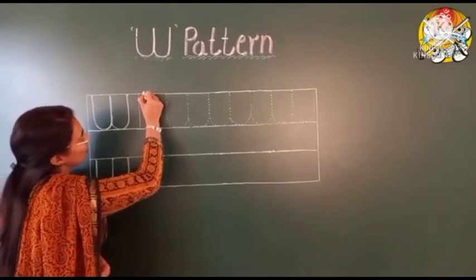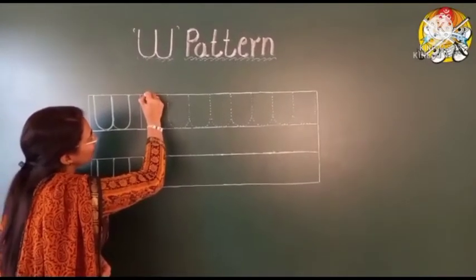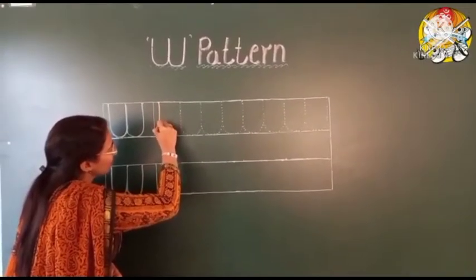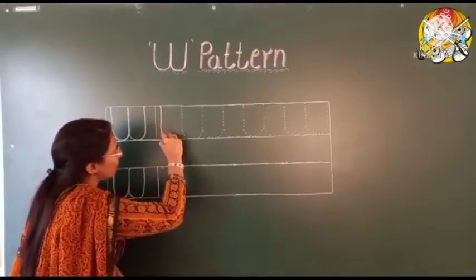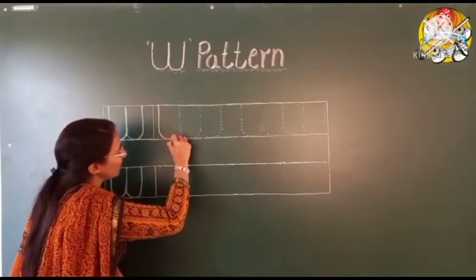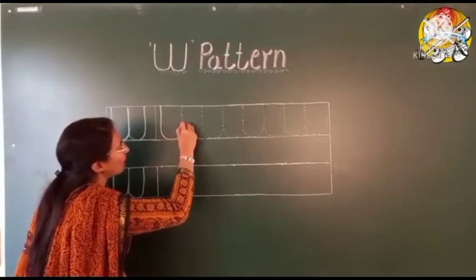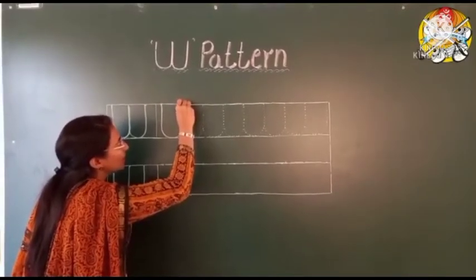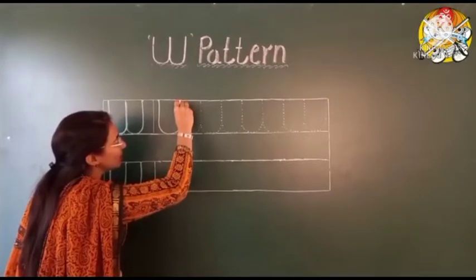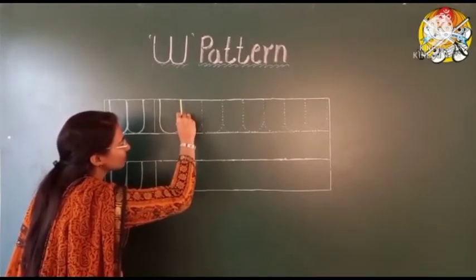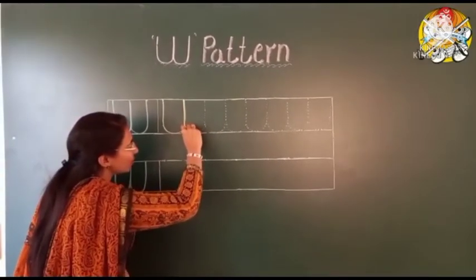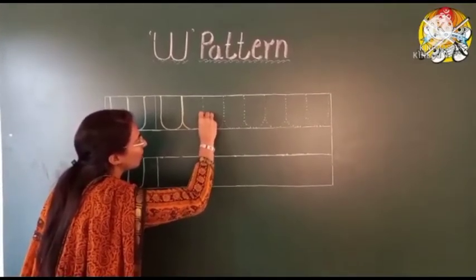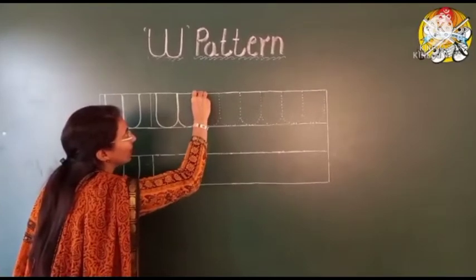See, from up, go down in standing line. Touch the down line. Make a curve, go up, touch the up line. Again, come down in standing line. Touch the down line. Make a curve, go up, touch the up line.